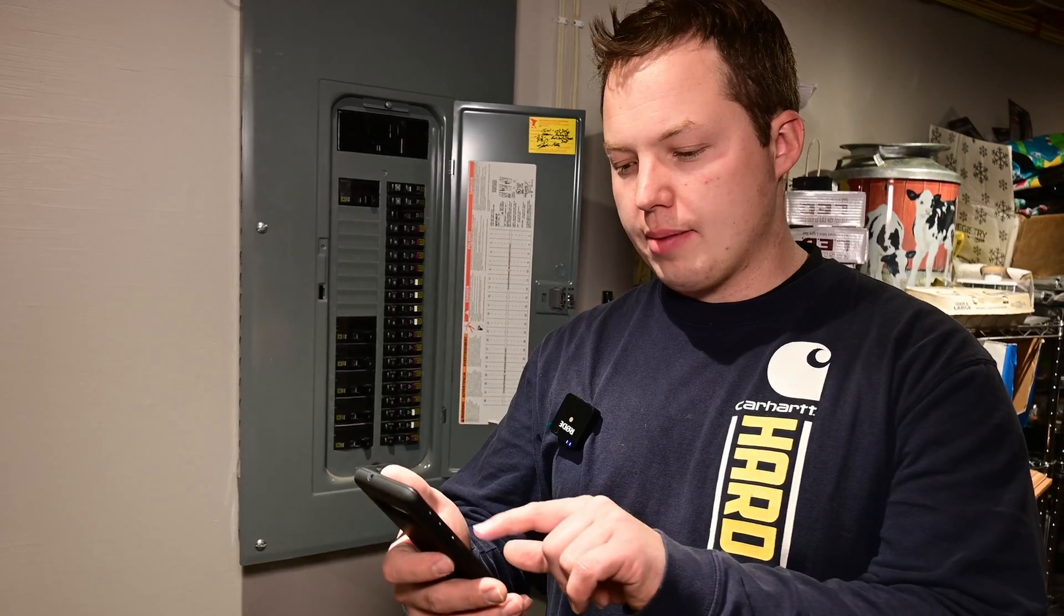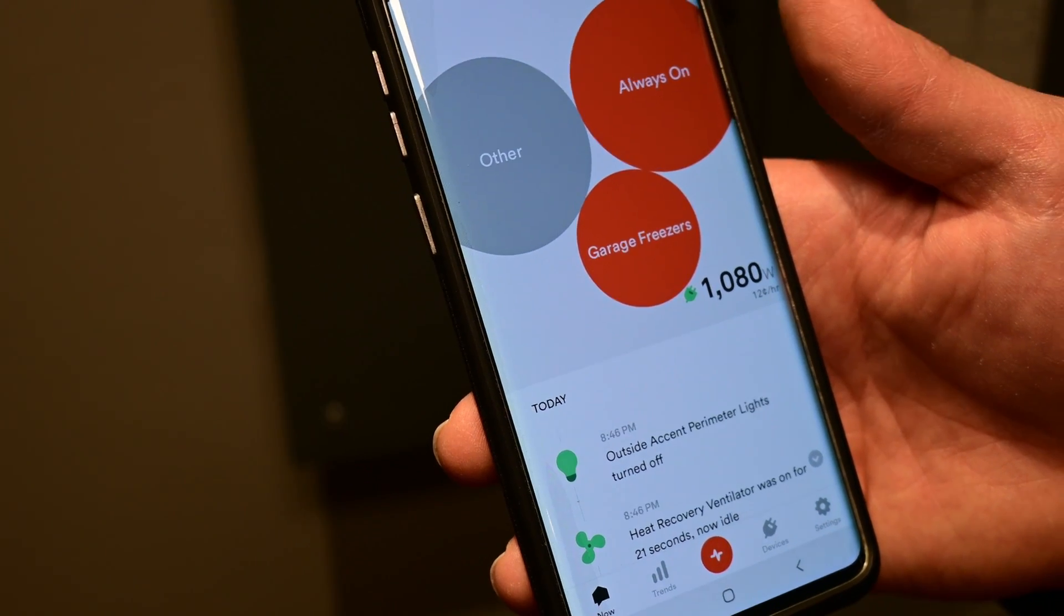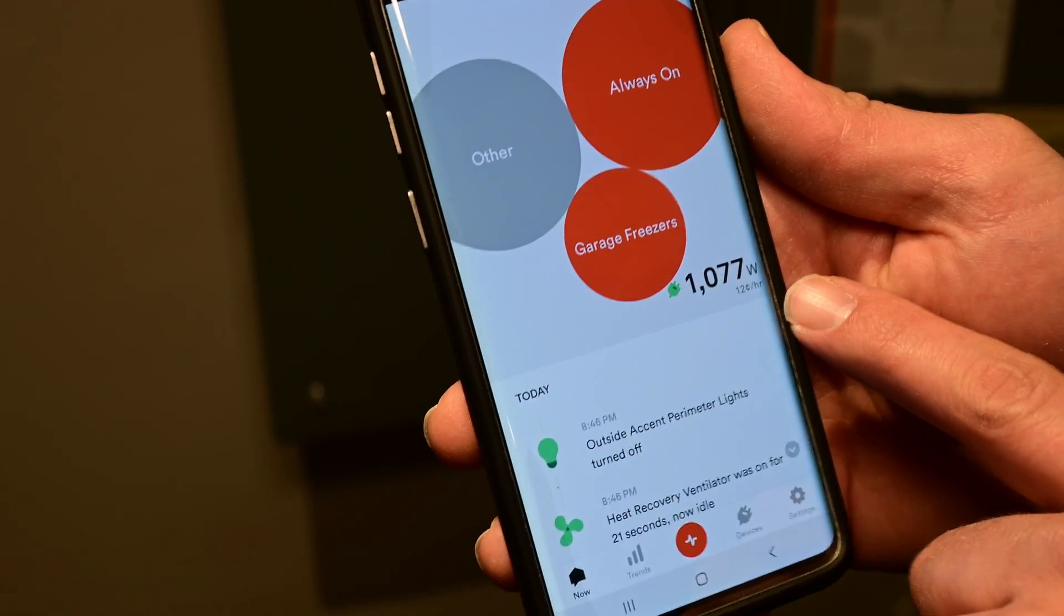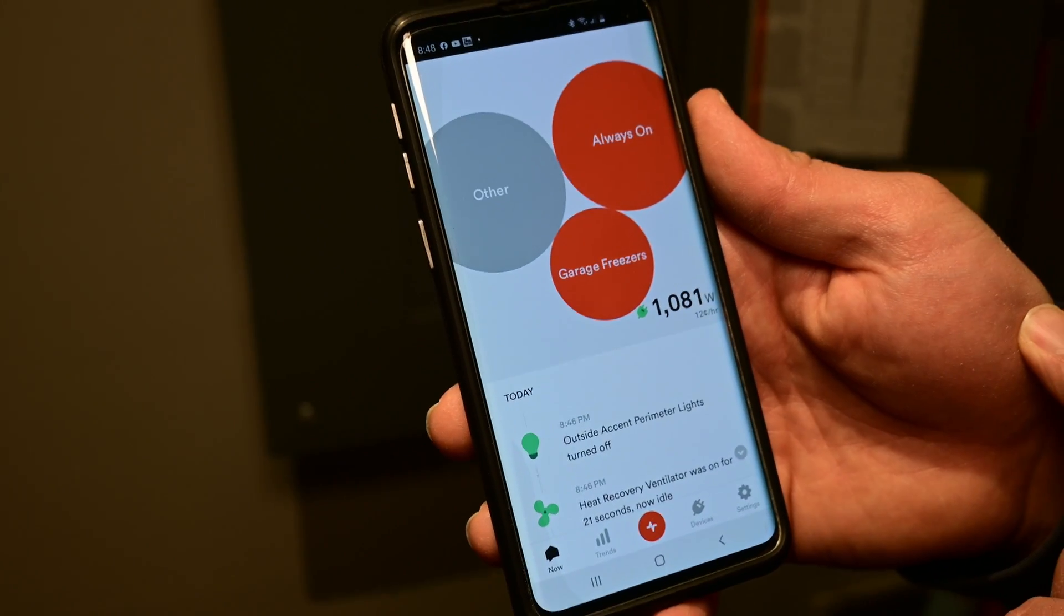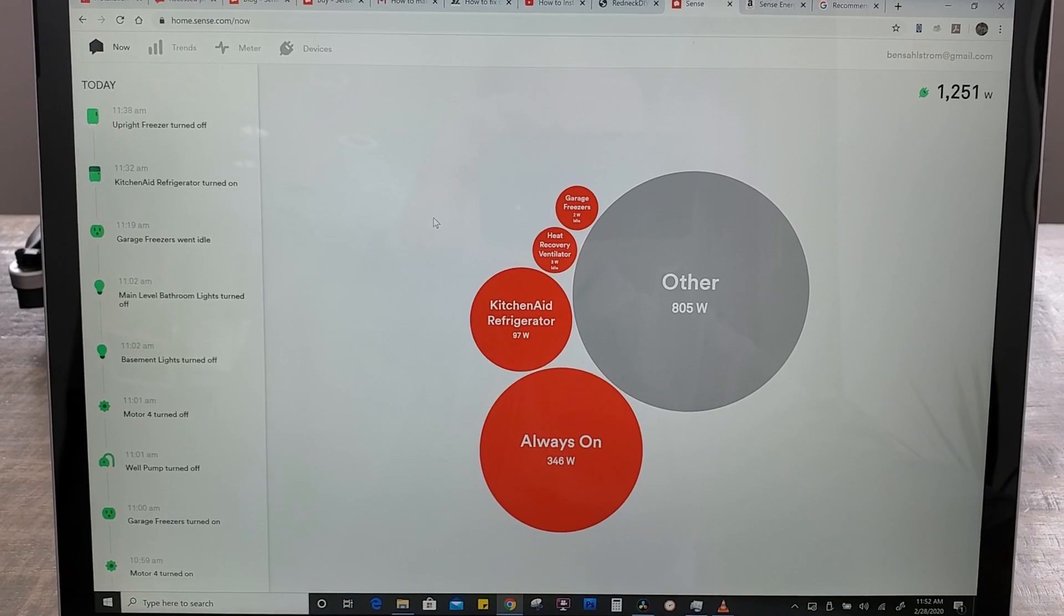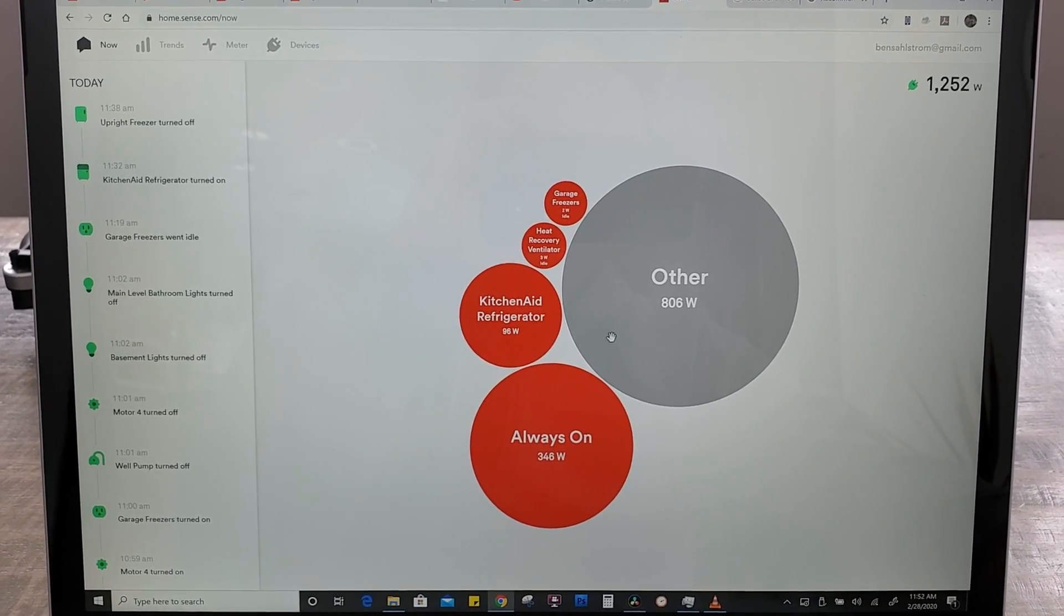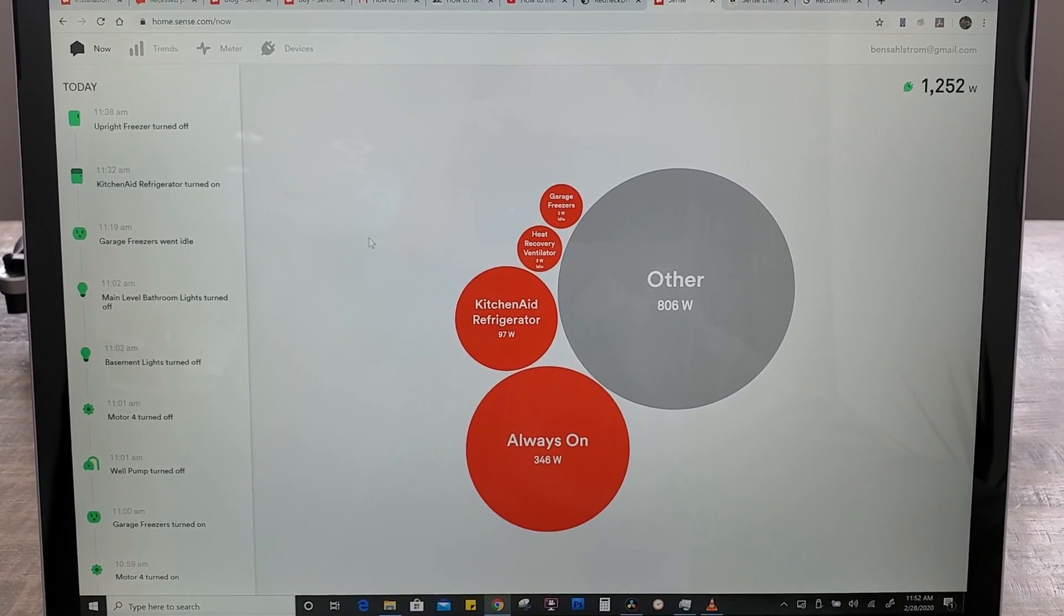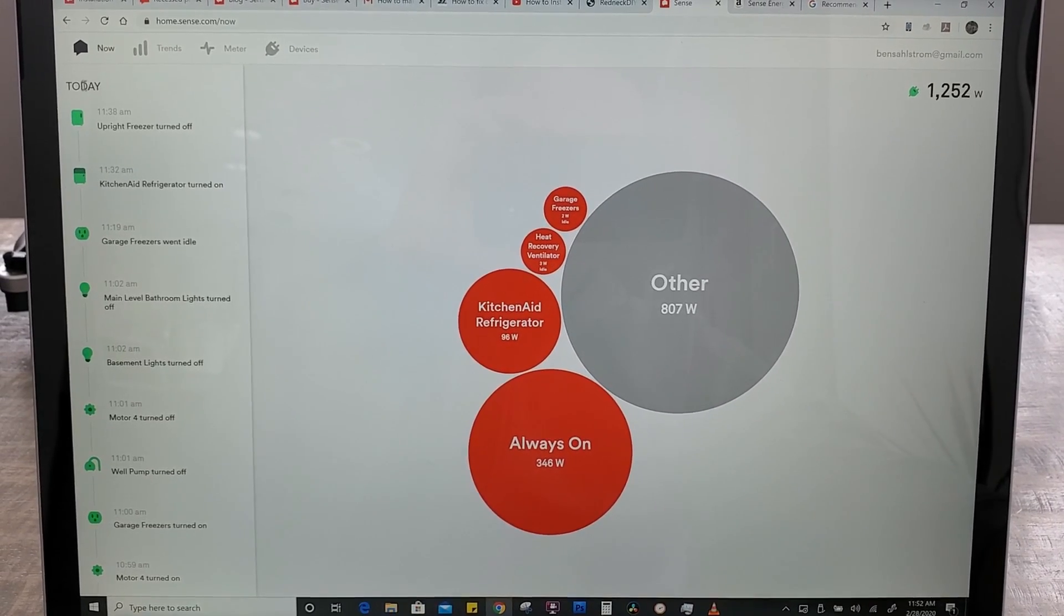I'm not going to go through every step in how you configure that. It's pretty self-explanatory as you go through the app. So this is what the app looks like once you get everything set up. You can see right now we're using 1,000 watts, a little bit more. Sense also has a really nice web application where you can see additional and more detailed information about the different appliances and power usage in your home.